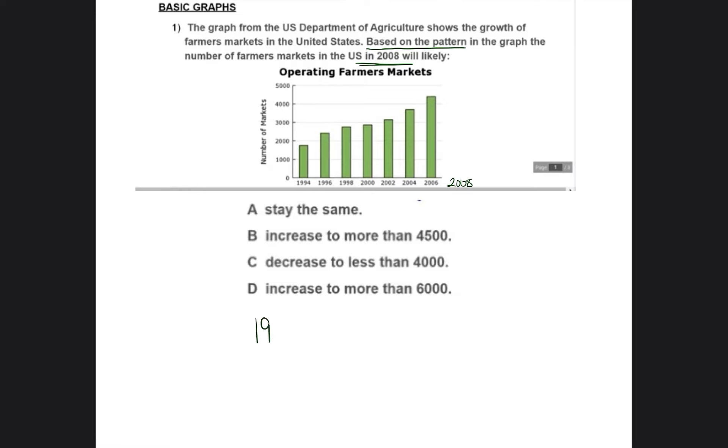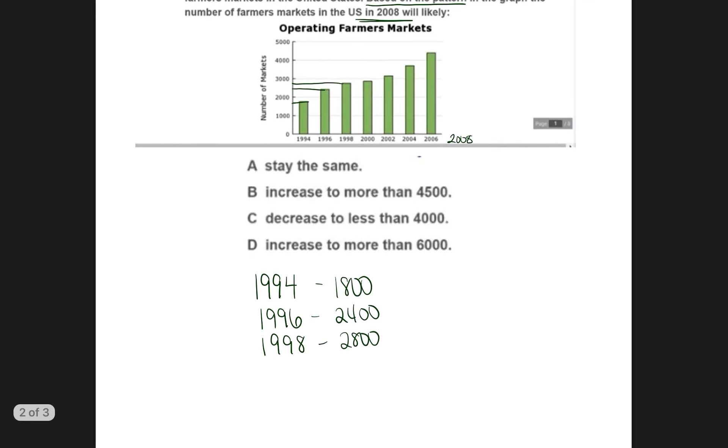So what I would do is for each year, I would just try to figure out how many farmers markets were there in each year? So I'll make my little line over. So in 1994, there are about 1,800 farmers markets. In 1996, there are about 2,400 farmers markets. And then in 1998, I'm going to draw a line over. That is about 2,800 farmers markets. And I'm going to do this for every one of the years.